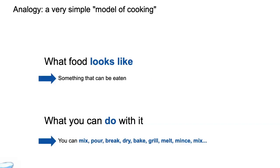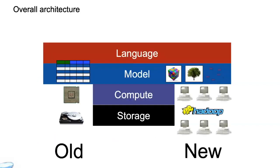So you can actually make a direct analogy with cooking. Who likes to cook here or bake? So you will understand immediately, right? So what does food look like? It's something that can be eaten. I would hope so. And then what you can do with it is all the vocabulary that you have in recipes, right? Mix, pour, break, dry, bake, grill, melt, mince, mix, and so on. This is all the vocabulary. That would be the cooking algebra right here. And the cooking model, it's very simplistic. The cooking model is what can be eaten. But that's basically the idea, right? And it's the same with data.